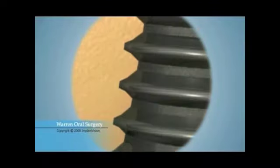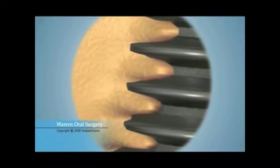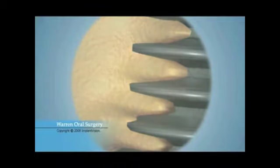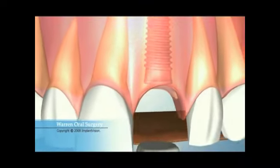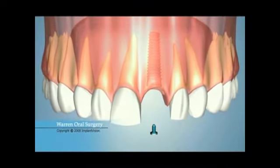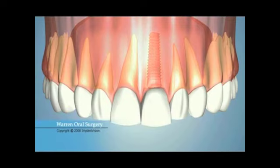A process known as osseointegration takes place, where bone molecules begin to attach themselves to the titanium surrounding the implant. It usually takes between two to four months for the bone to securely bond to the entire implant surface. The final phase involves the custom restoration being fitted and securely placed.